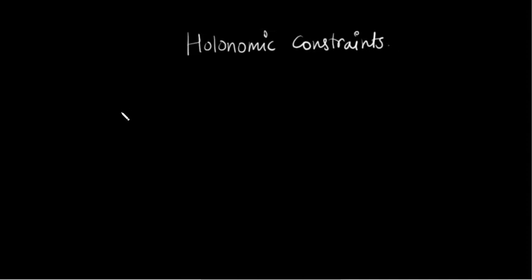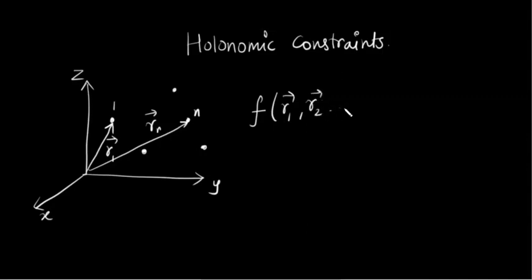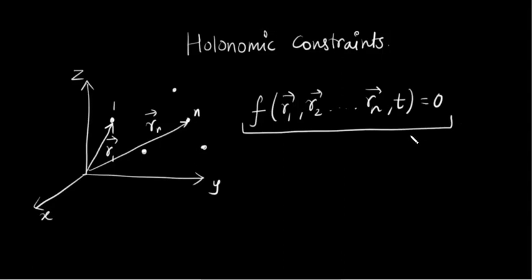Let's start this discussion of holonomic constraints and non-holonomic constraints. Let's discuss holonomic constraints first. Suppose we have a system with n particles, where the position vector of the first particle is r1 bar and for the nth particle it is rn bar. If you can relate these position vectors — and possibly time — in the form of an equality, then that constraint is a holonomic constraint.